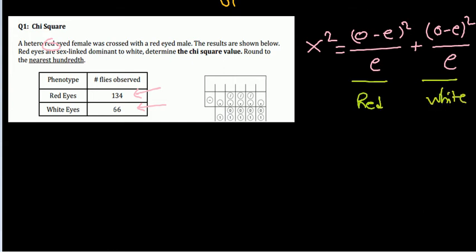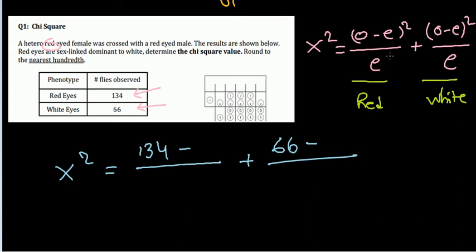Chi-square: observed value minus expected. The observed value is 134 and expected we don't know yet. That's what we need to figure out. Plus for the white it is 66 minus the expected. The first thing to consider is to find out the expected values. We need to find the expected red and the expected white.